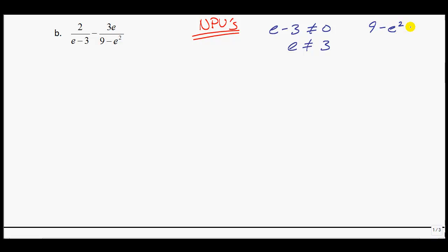On the other one here, we have 9 minus e squared cannot equal 0. This time I'm going to move the e squared to the other side because then it comes positive. Now in order to get e by itself, I will take the square root and we get e cannot equal plus or minus 3. So basically that ends up being your restriction.